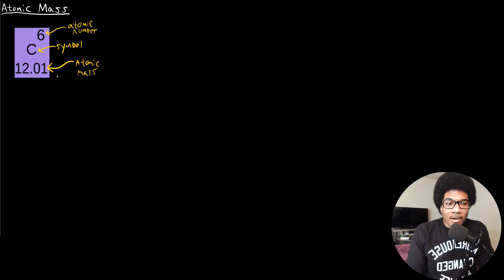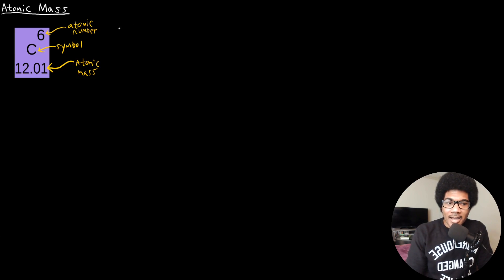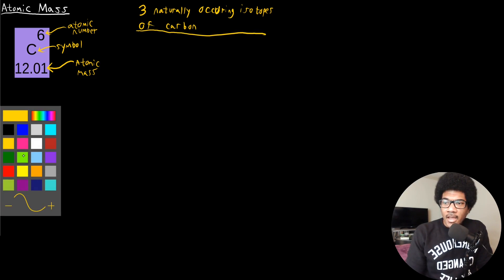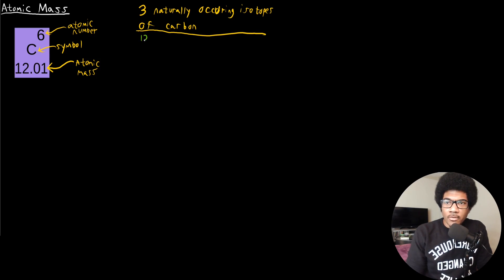The atomic mass is the average weight of a carbon atom based on their natural occurrence in nature. There are three naturally occurring isotopes of carbon: carbon-12, carbon-13, and carbon-14.